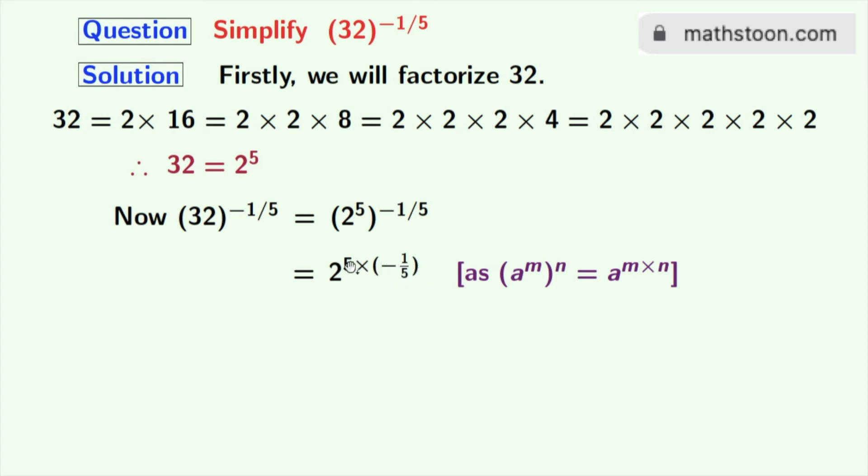Simplifying the power we get 2 power minus 1 which is equal to 1 by 2. As we know that a power minus n is equal to 1 by a power n where a is 2. And this 1 by 2 is our final answer.